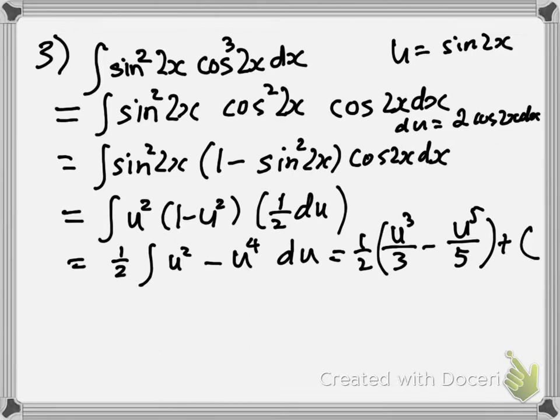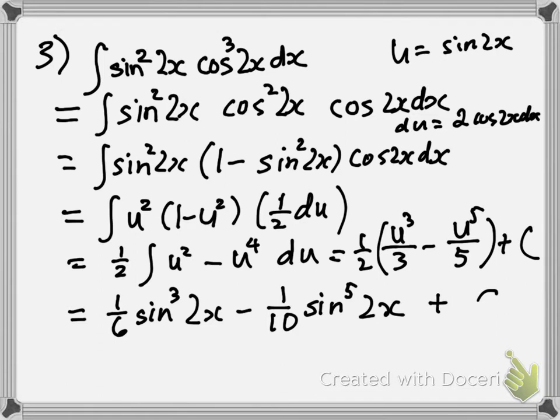Now putting u back with sine of 2x and expanding the half that was outside, we get 1 sixth of sine cube of 2x minus 1 tenth of sine to the 5 of 2x plus C as the anti-derivative to our original problem.